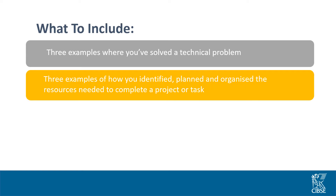You'll also need to demonstrate three examples of how you have identified, planned and organised resources. You could explain how you took into consideration cost, quality, safety and environmental impacts. You could also make reference to what equipment was used, how any data gathered was analysed, and how you initiated the project to produce a desired outcome.